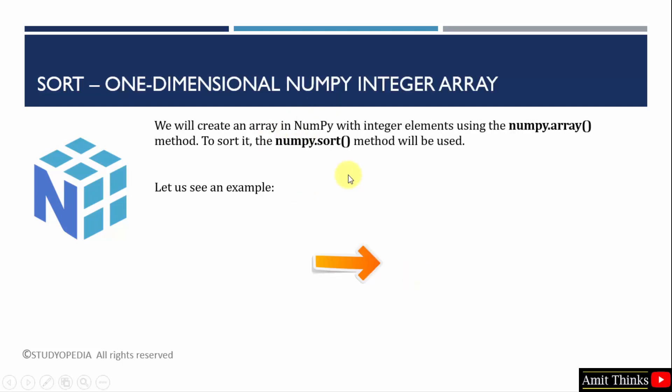First, we will see how to sort a one-dimensional numpy array, and that is an integer one. For that, we will use the numpy.sort method as discussed before. Let us see the example.